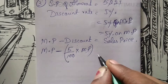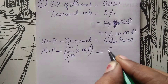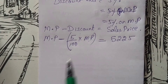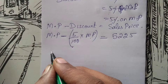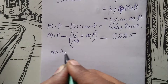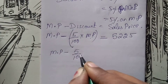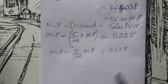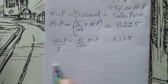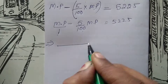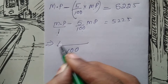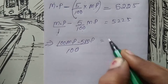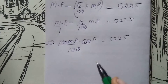So, marked price minus 5/100 of marked price equals selling price 5,225. We are going to simplify by taking LCM 100, so this will become 100 marked price minus 5 times marked price equals 5,225.